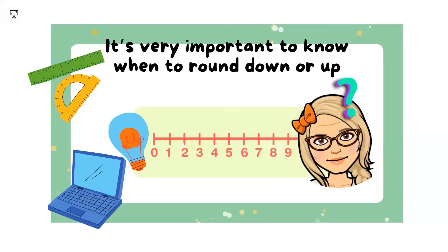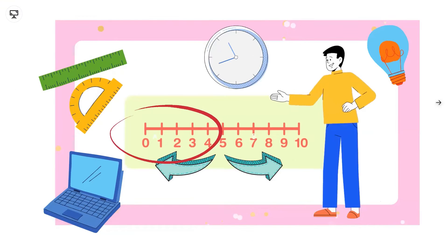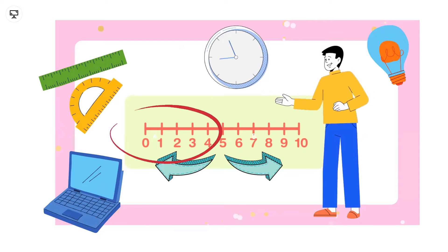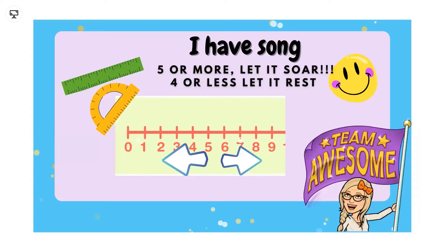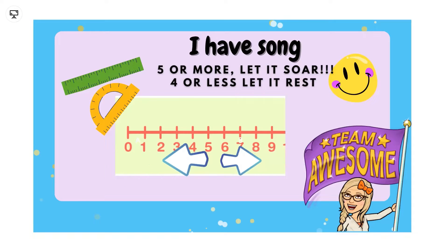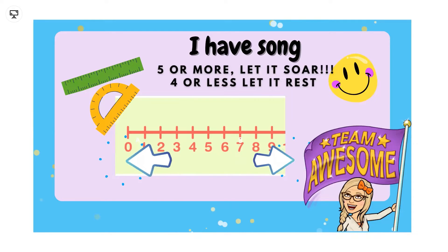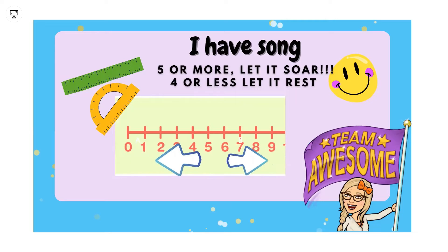That is something very important that we need to keep in mind when we're going to round. We must know when to round up or when to round down. Let's pay attention to this. Always, when we have four or less, we're going to let it rest — we're going to keep the number like it is. And if we have five or more, we're going to let it soar — we're going to increase the number. Here's a song: five or more, let it soar; four or less, let it rest. Keep that song in mind and you're going to be successful.